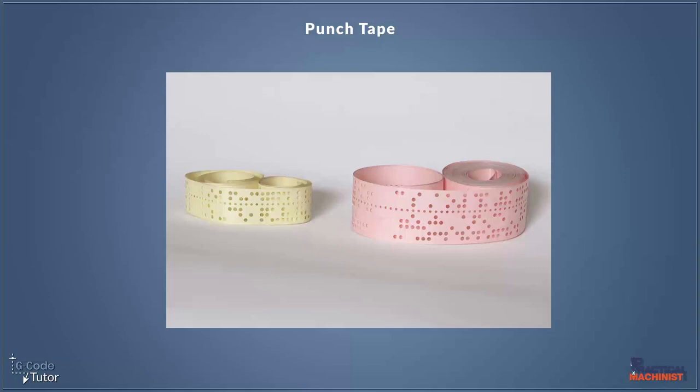So how does this punch tape work? Well we've got two different examples here. We've got five hole tape and we've got eight hole tape. So the five hole tape holds 32 characters and the eight hole tape holds 256 characters. So with the eight hole tape we can store a lot more characters and different kinds of information.